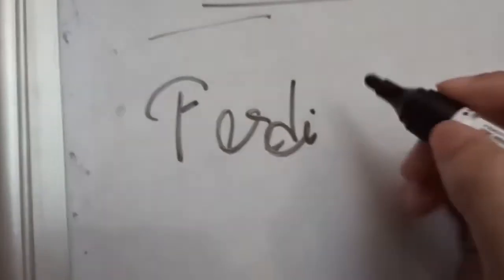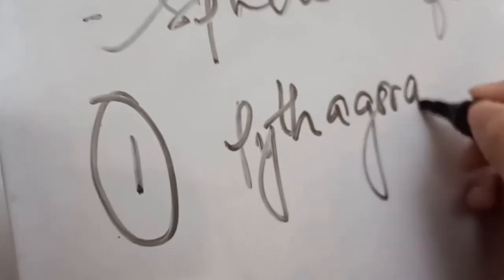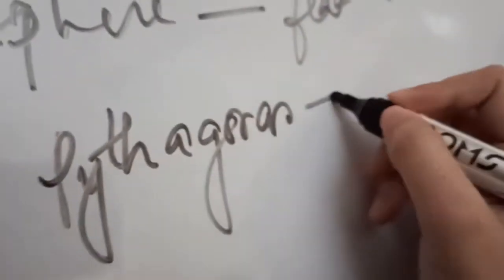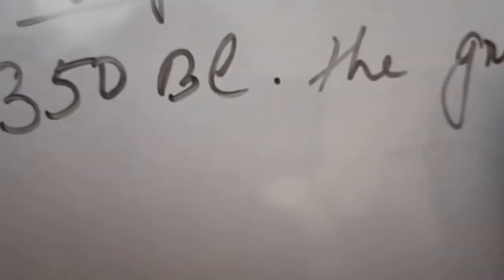Ferdinand Magellan was the first who gave the proof that Earth is a sphere, not a flat surface. Then Pythagoras, who was a Greek mathematician and philosopher, postulated that the Earth is a sphere about 600 years ago. Finally, around 350 BC, the great Aristotle first declared that the Earth is a sphere, not a flat surface.